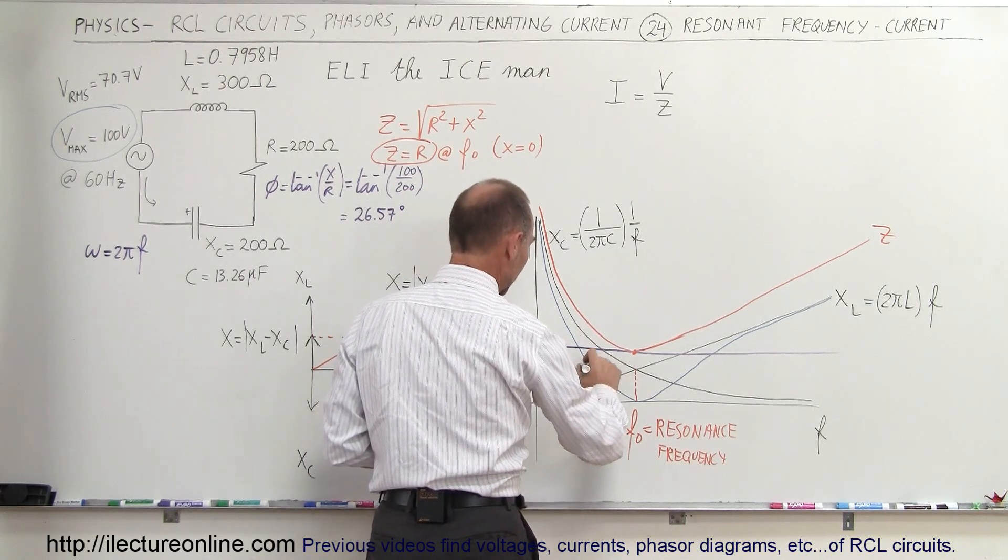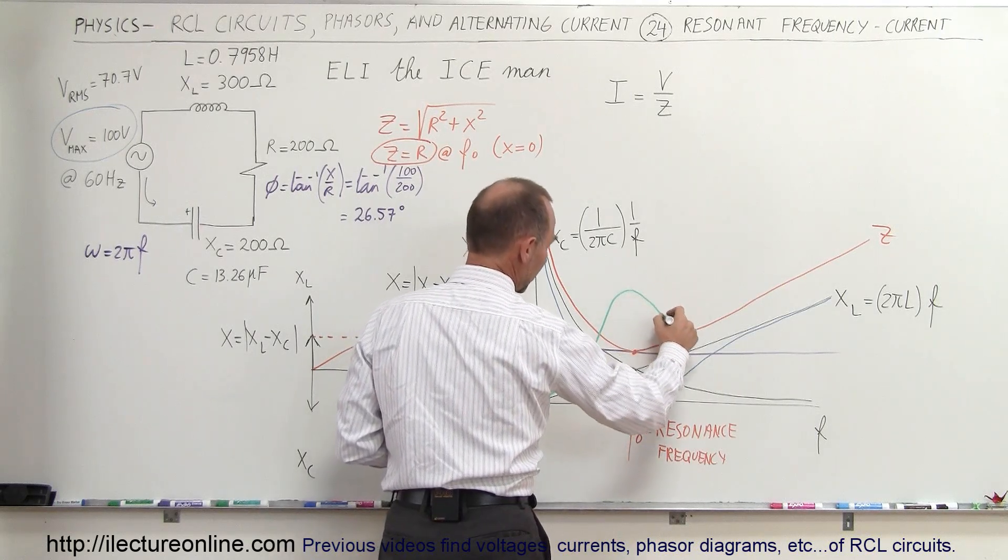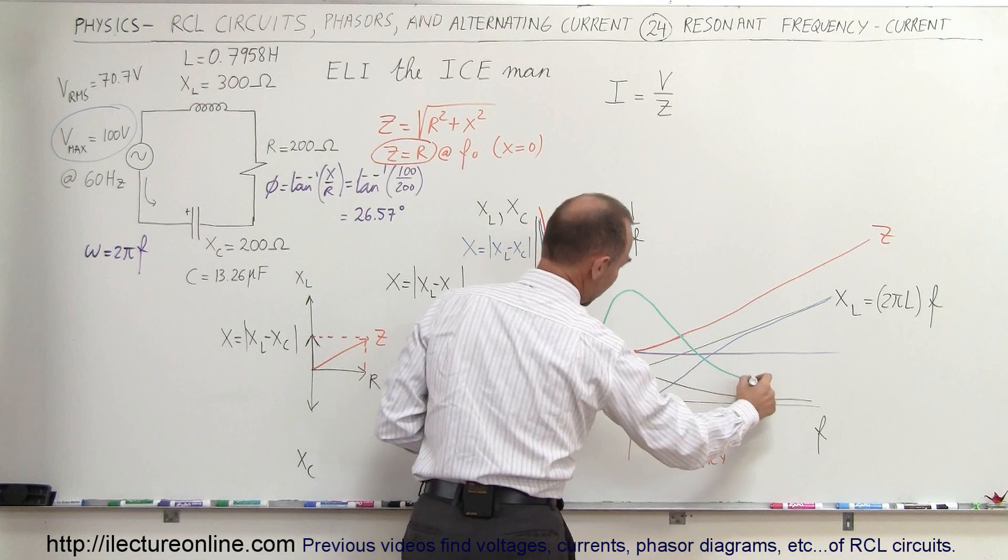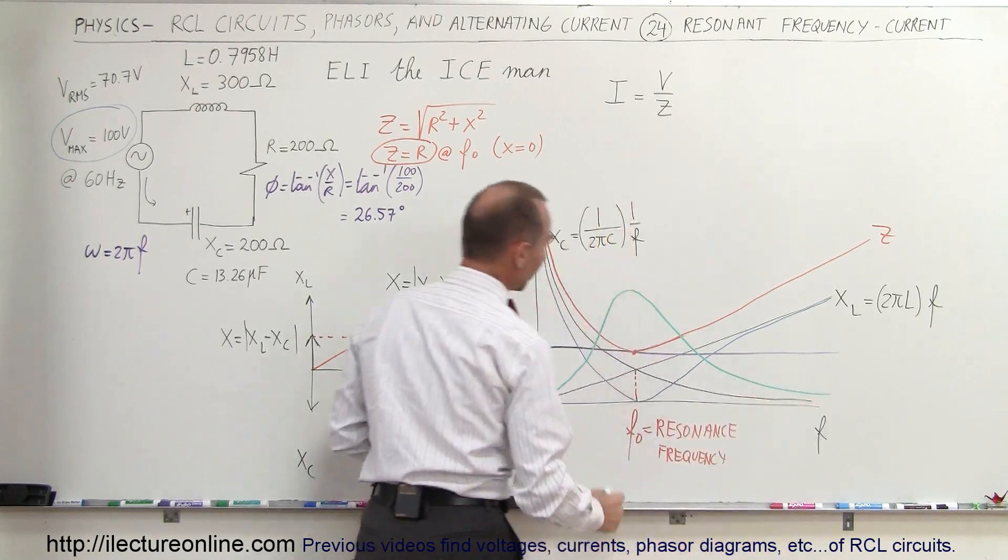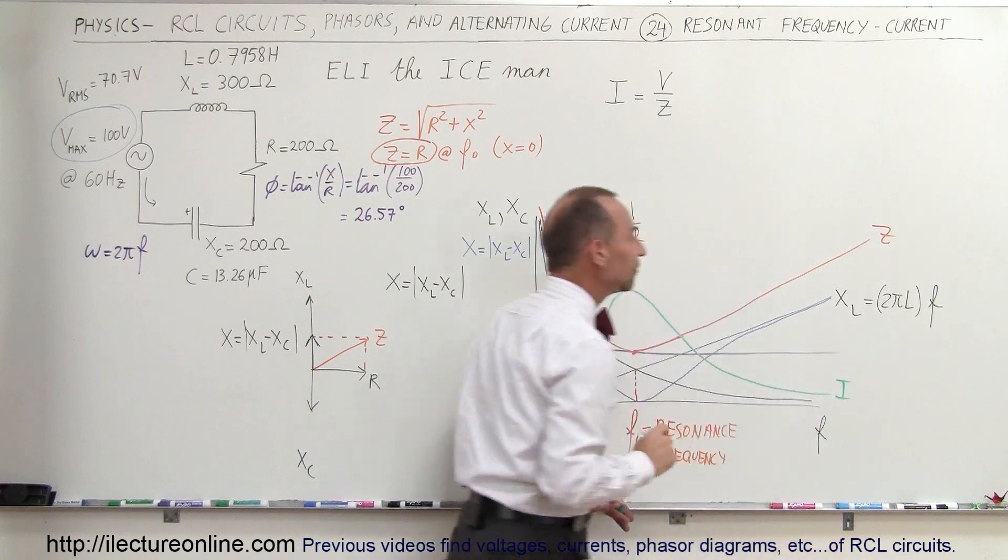Like this, it will reach a maximum value, and then the current will begin to decrease, and go like this. So this would be the current as a function of the frequency.